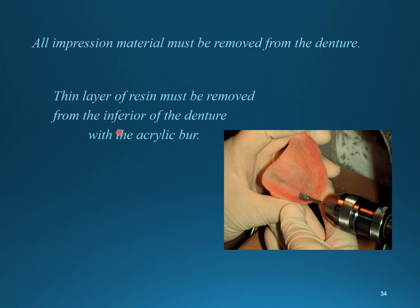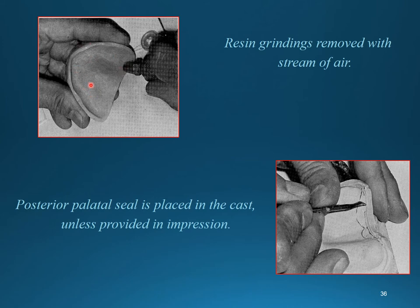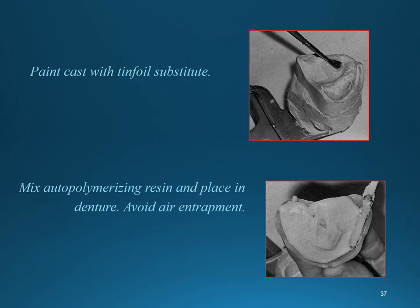A thin layer of resin is removed from the inferior surface of the denture. Borders are reduced 2 to 3 mm, and any notches are deepened. Any remaining resin material is removed from the cast. The post-palatal seal (PPS) is highlighted, drawn, and deepened in the cast using a carver or instrument.